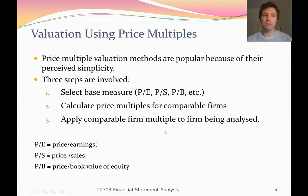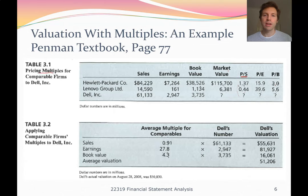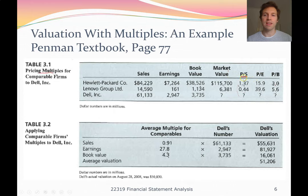Here's an example from the Penman textbook on how to apply some price multiples. We've got three companies in the IT hardware space: Hewlett Packard, Lenovo, and Dell. From their financial statements we have their sales revenue, earnings or net profit, and book value — that's the book value of equity on the balance sheet. We also have the market value, which is the number of shares times the price per share, also called market capitalization. From this information we calculate the price to sales, price to earnings, and price to book ratios. For Hewlett Packard, we take the market price of 115,700 and divide by sales revenue of 84,229 to get a price to sales ratio of 1.37.